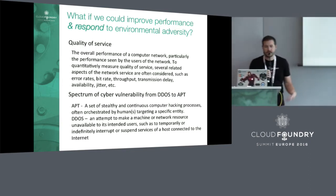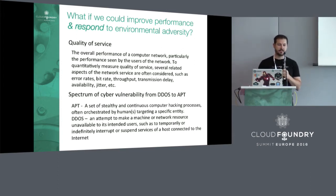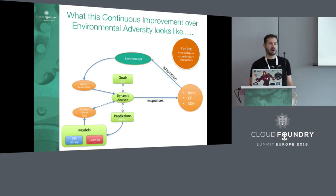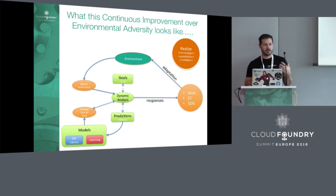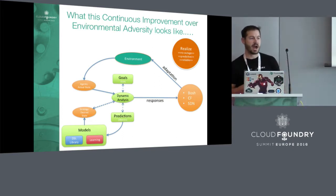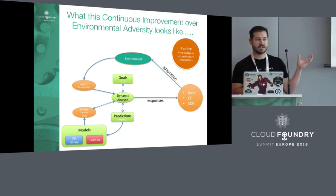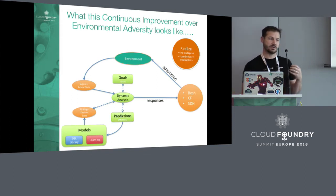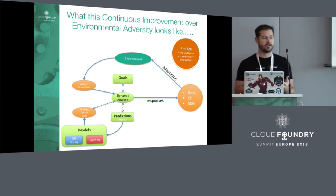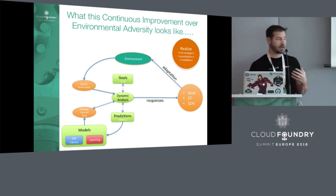Ultimately, it comes down to: what if we could actually improve platform performance and respond to environmental adversity at the same time, rather than reacting afterwards? What would continuous improvement over environment adversity actually look like? Do you pack everything into Bosch and make it super smart? Do you pack everything into Cloud Foundry and use Diego's abstractions? Do you do everything in the SDN layer? Or do you extract all these things out so that you can do higher-level analytics and sets of patterns and recipes to articulate the entire environment changing in response to the threat?